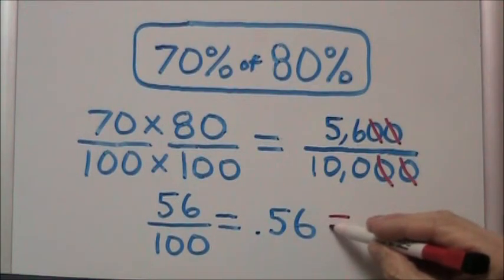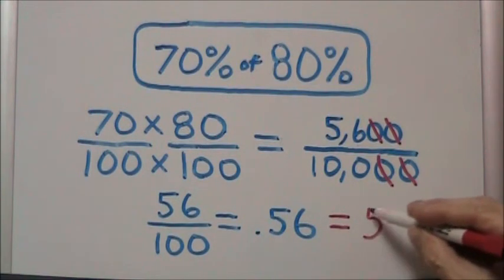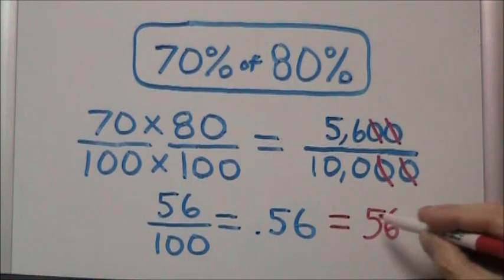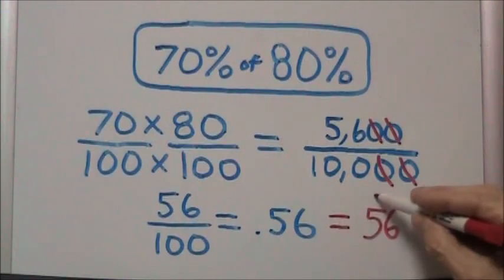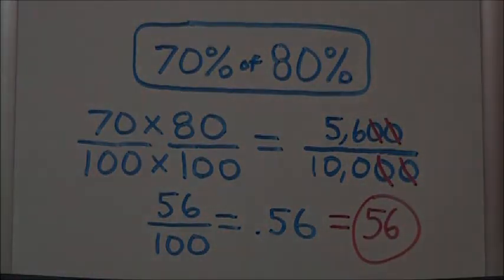Your whole number answer will be 56. All you're going to be doing is taking the decimal and moving it two places to the right. Thank you.